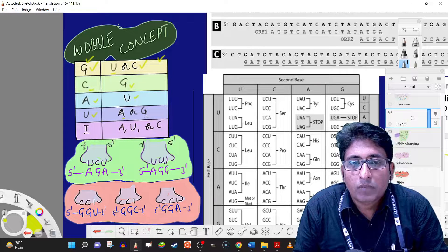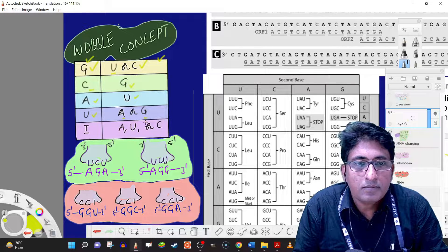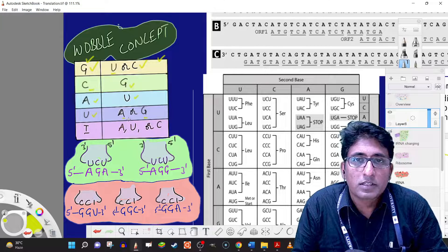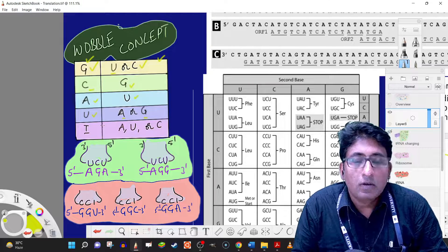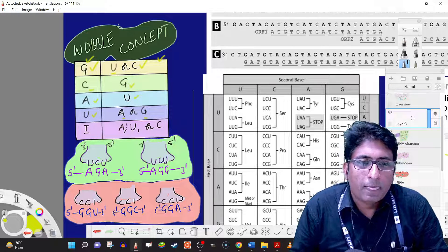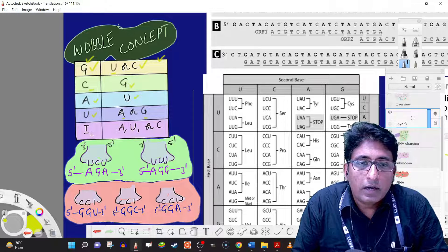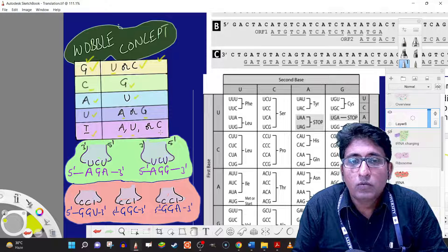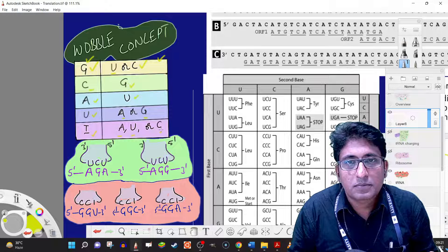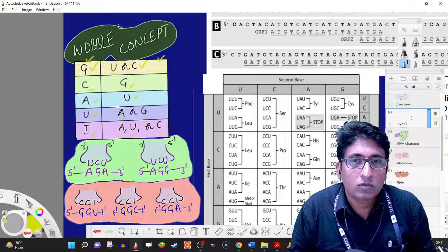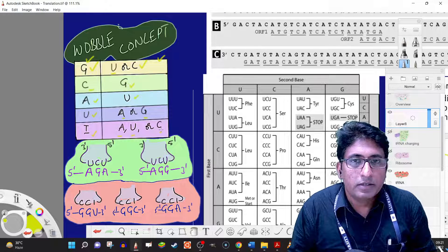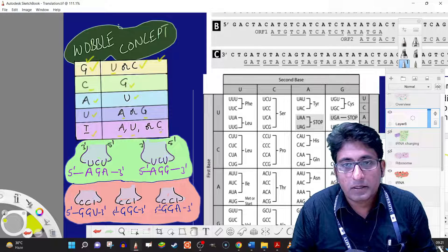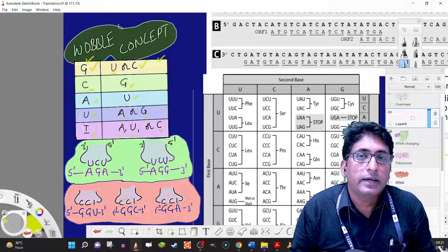If we have uracil in the anticodon, it could recognize A or G. Normally it would only base pair with A. If it is inosine, then it can recognize A, U, and C.